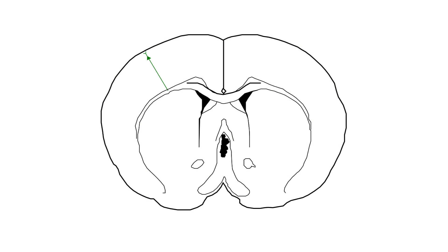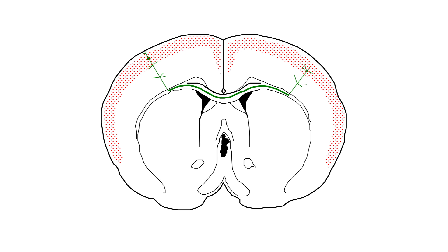During normal development, neurons that comprise the corpus callosum begin to form ipsilateral connections and cross the midline by postnatal day 3. Their axons then begin to invade the contralateral cortical plate and branch profusely. CACS1 is a transcription factor that is selectively expressed in layer 2-3 neurons of the cortex — the main population of neurons that forms the corpus callosum.